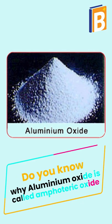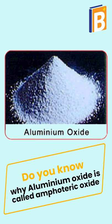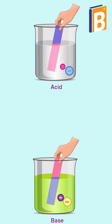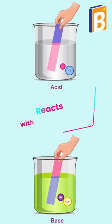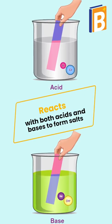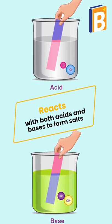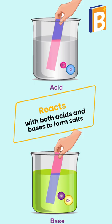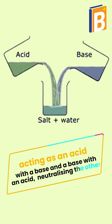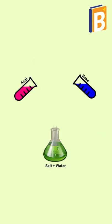Do you know why aluminium oxide is called an amphoteric oxide? Because it reacts with both acids and bases to form salts — acting as a base with an acid and as an acid with a base, neutralizing the other and producing a salt.